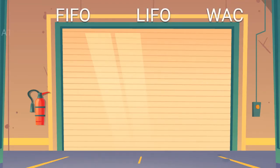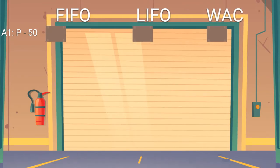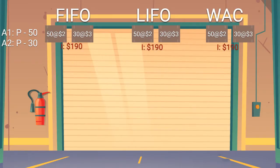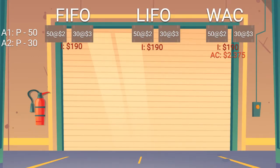Let's make our first two activity items be a purchase of a box of 50 lemons at $2 each and 30 lemons at $3 each. This results in all their inventory balances being the same at this point. For the WAC method, we note that the average cost is $2.375. So what's next? Let's make our next activity a sale of 25 items.